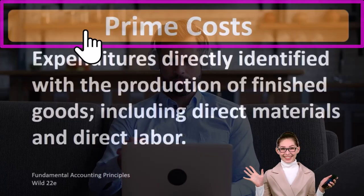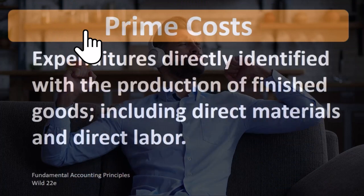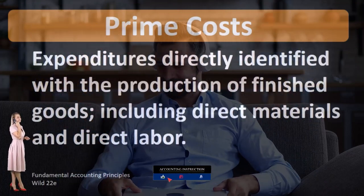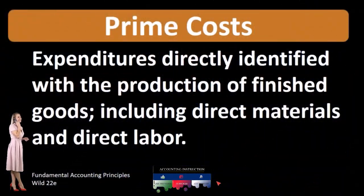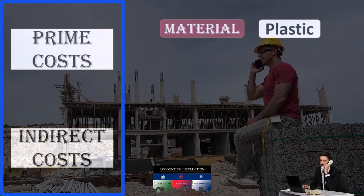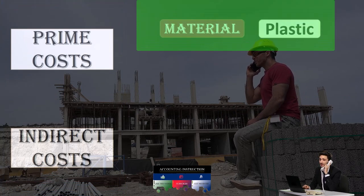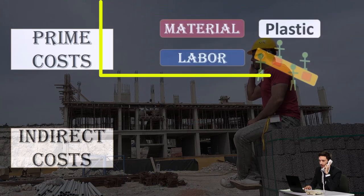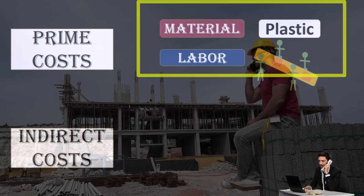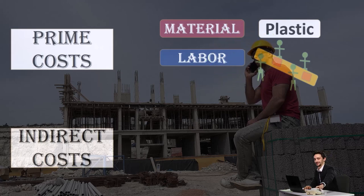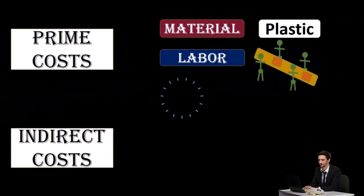When we're thinking prime costs, we're basically thinking those things directly applicable to the finished goods — often thinking of a manufacturing company — those items being direct materials and direct labor. Direct materials could be something like the plastic or the wood that would go into the product. And we have direct labor, the labor that we can tie directly to either a job or a process cost system. We want to be able to tie these things directly to the inventory within a production process within a manufacturing company.